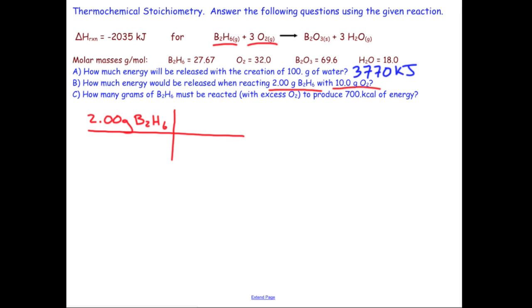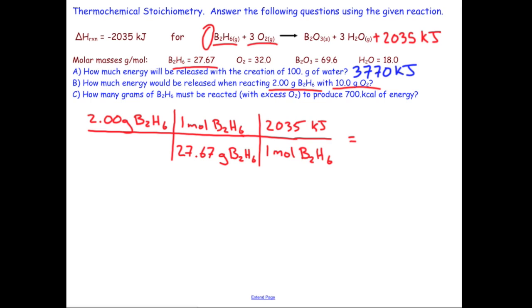Again that is mass. First go to moles before I can use my stoichiometry conversion. Here is that number grams of B2H6 per one mole of that species. And it appears that there is a 1 in front of that for my energy that I accidentally erased before. So 1 mole for 2035 kilojoules. That would give me 147.1 kilojoules.